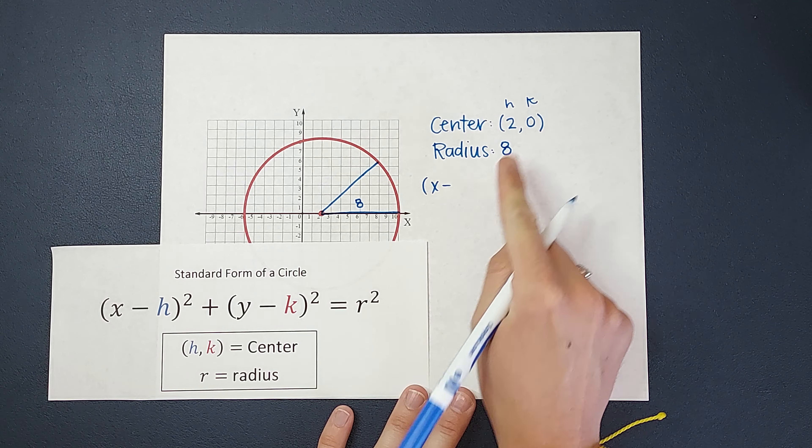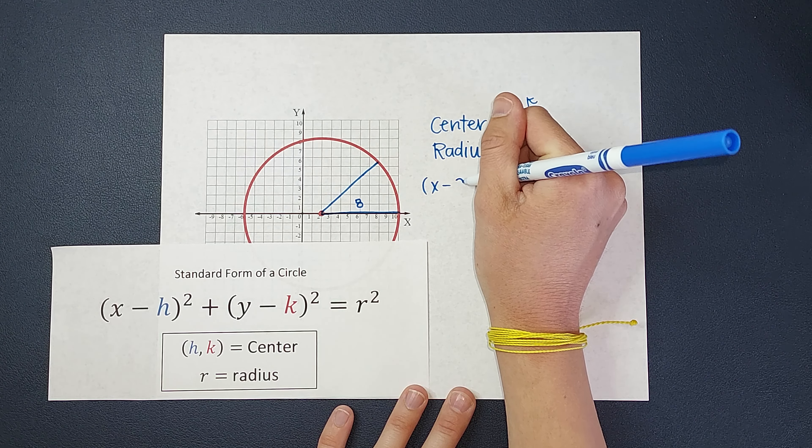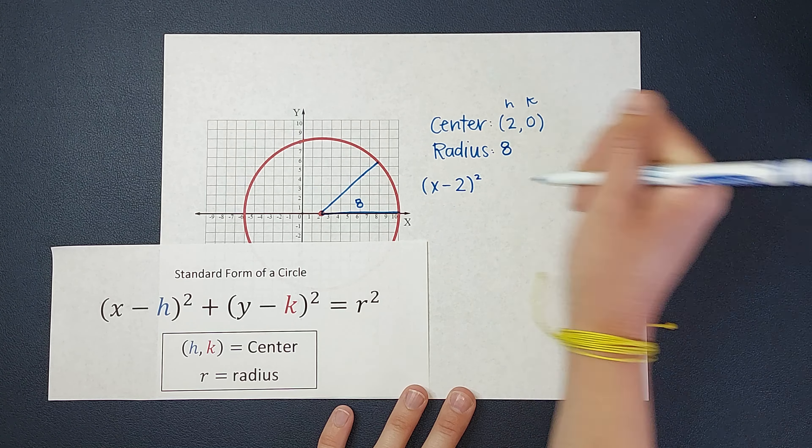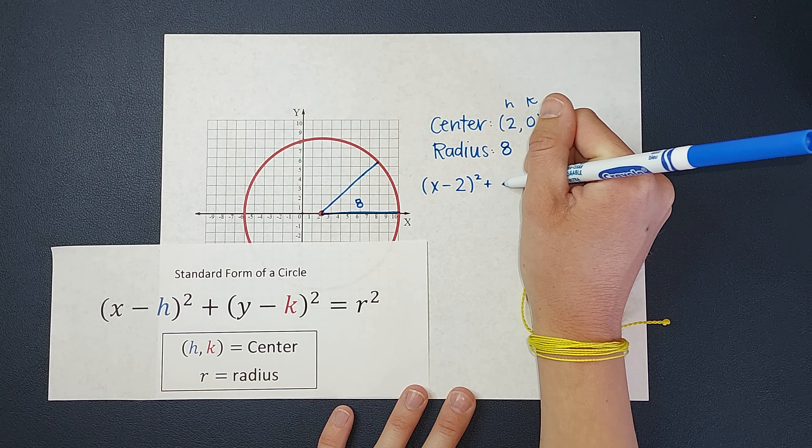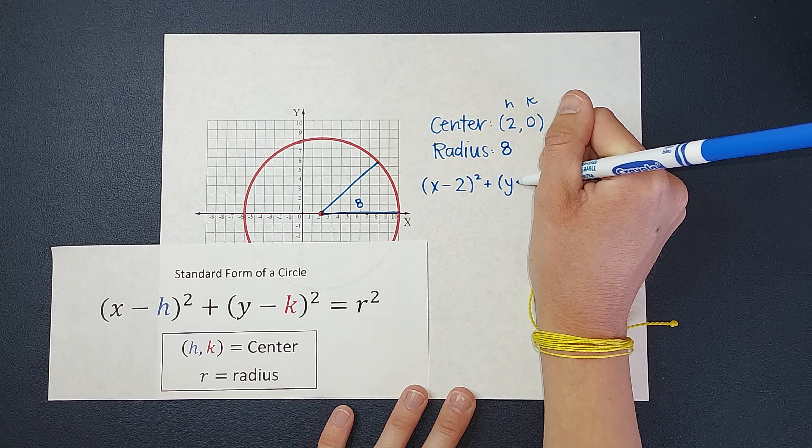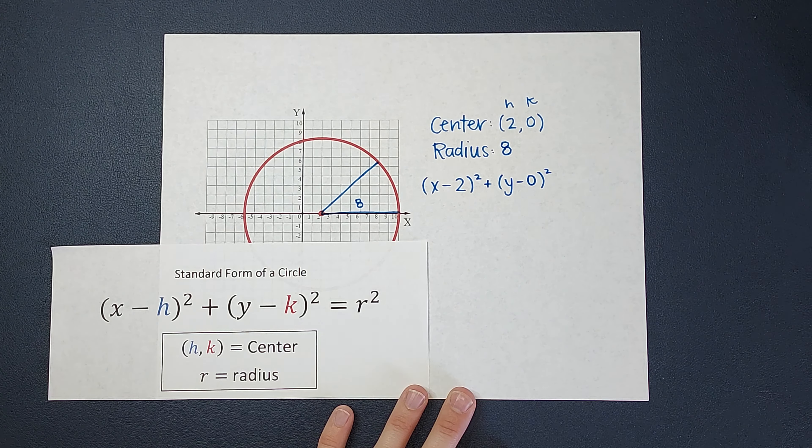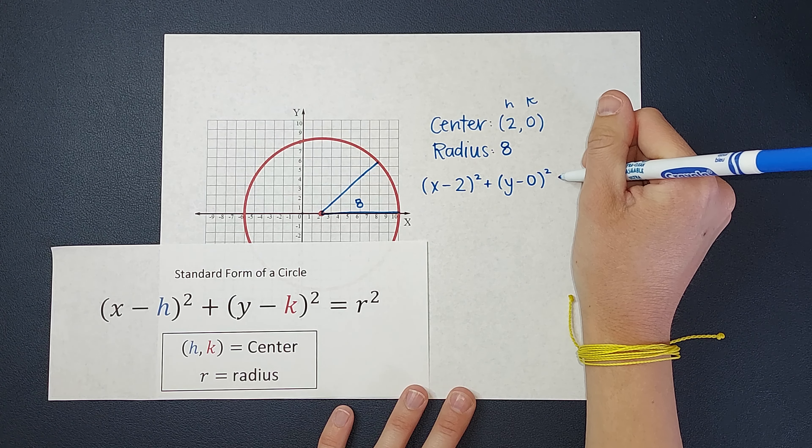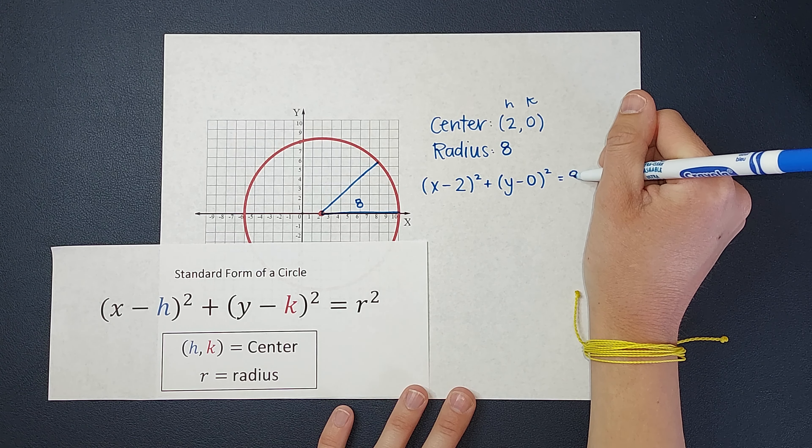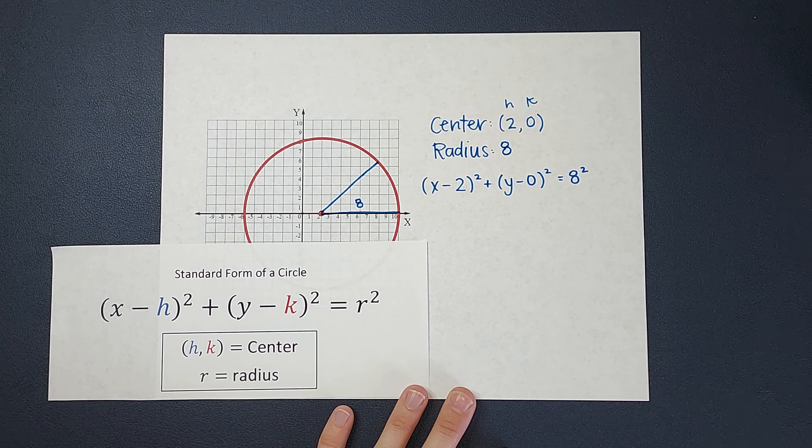So x minus h, which is 2, squared, plus y minus k, which happens to be 0, squared, equals my radius r squared.